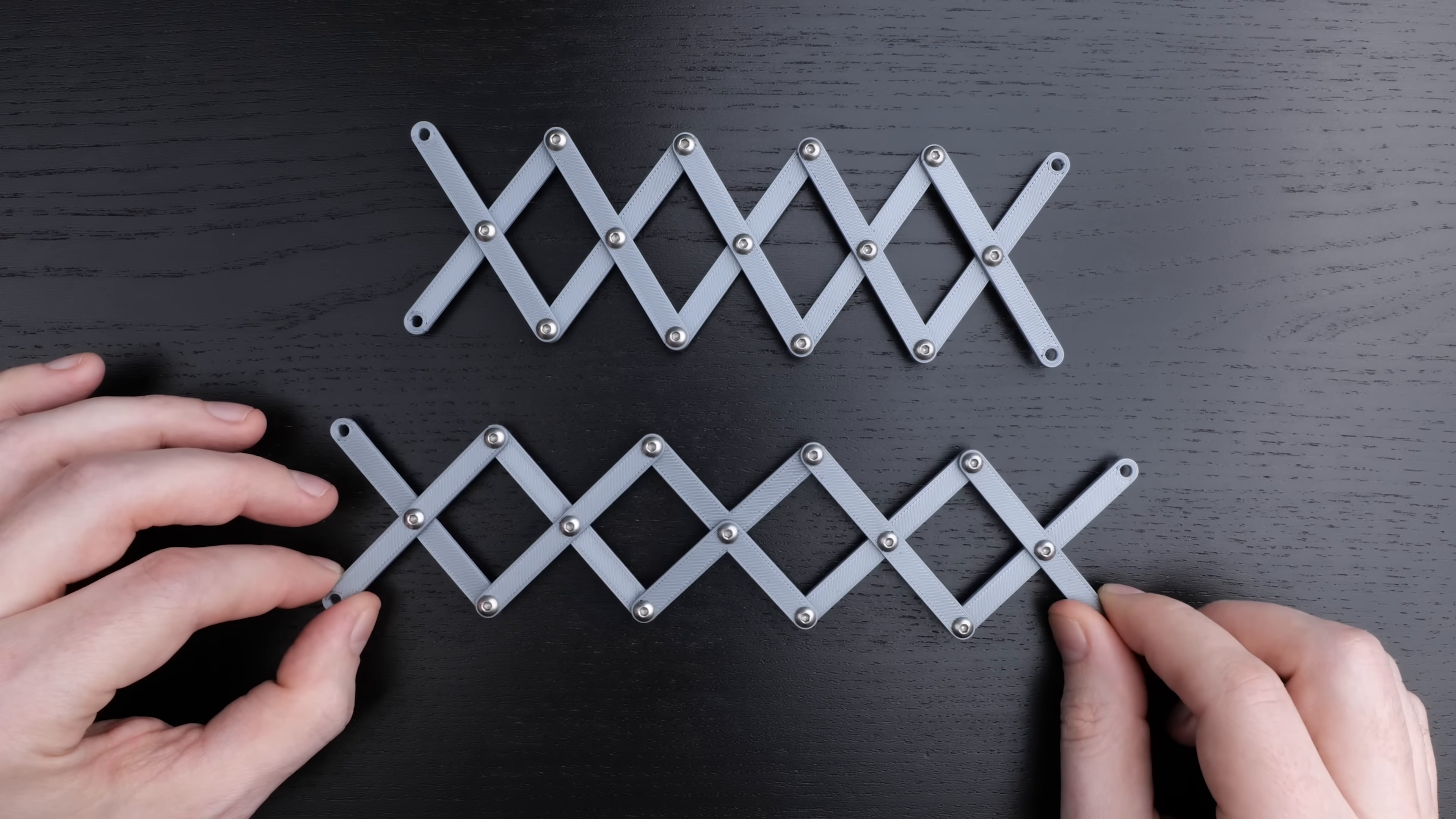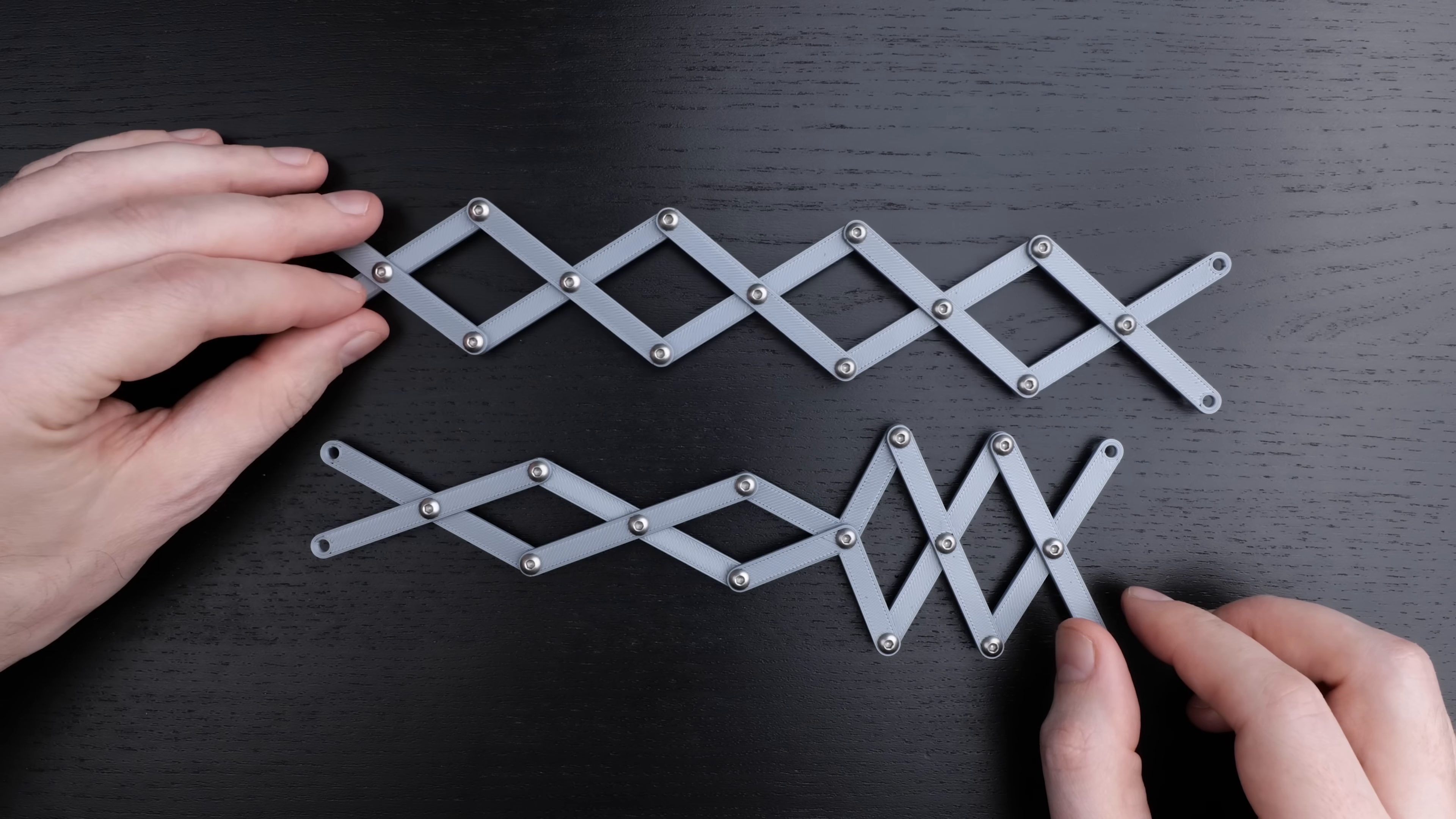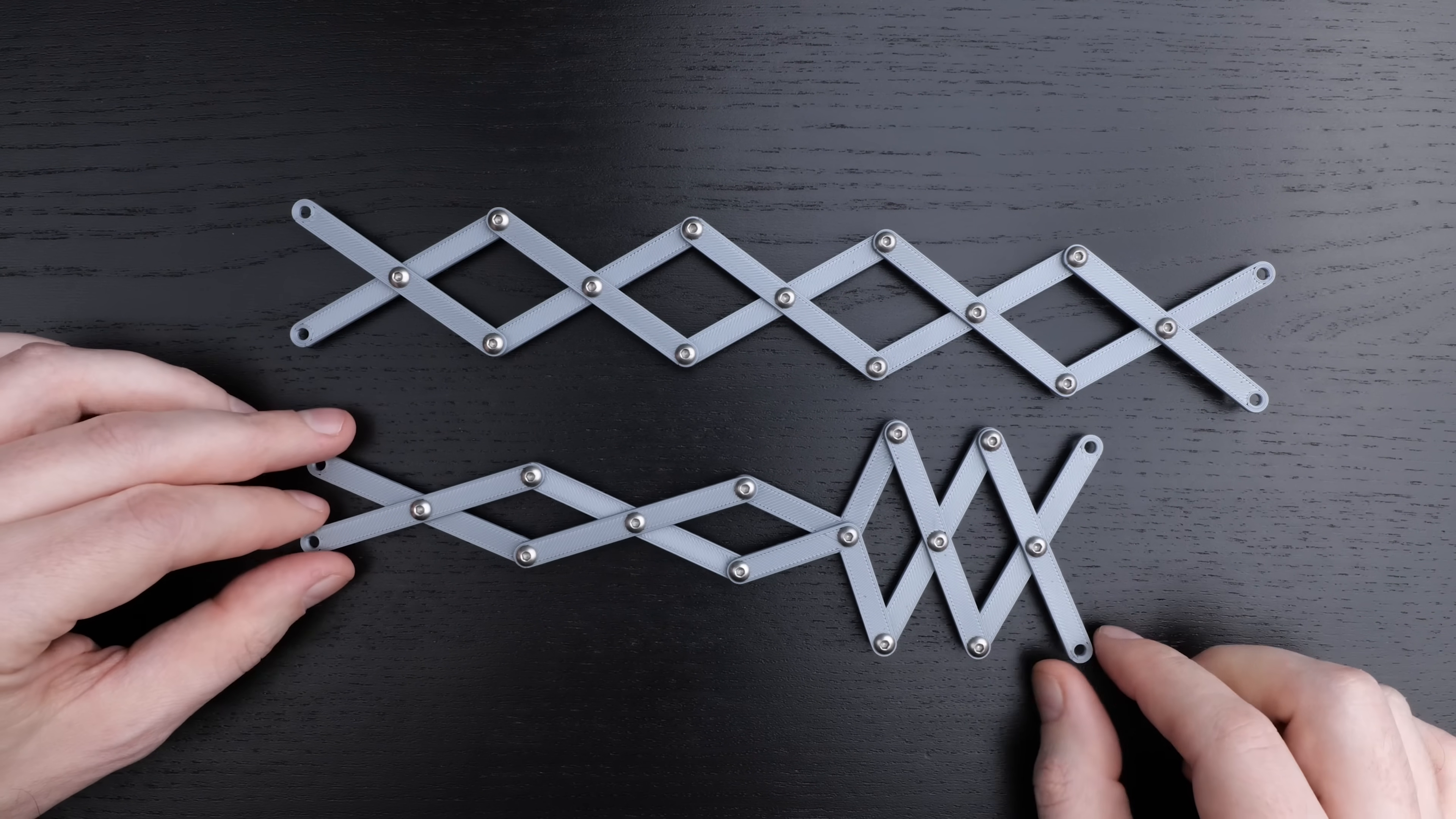And so that sort of raises the question, can you make an AND gate? So an AND gate is another sort of logical operation. You have two inputs, say, on the left. You would need one output on the right somehow.